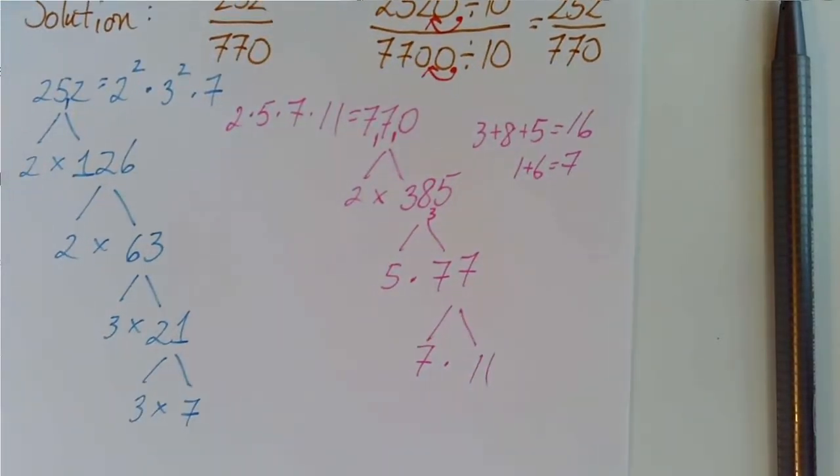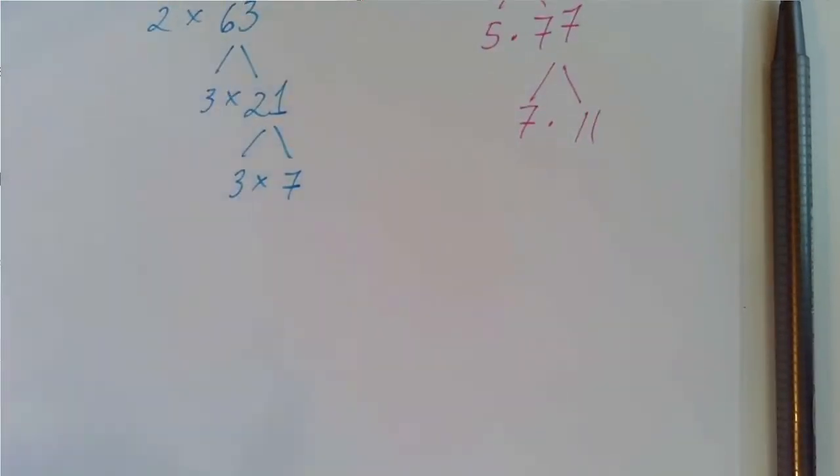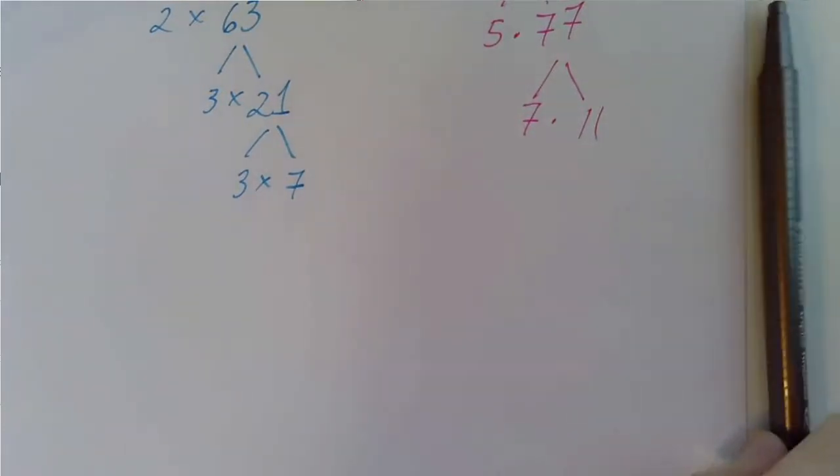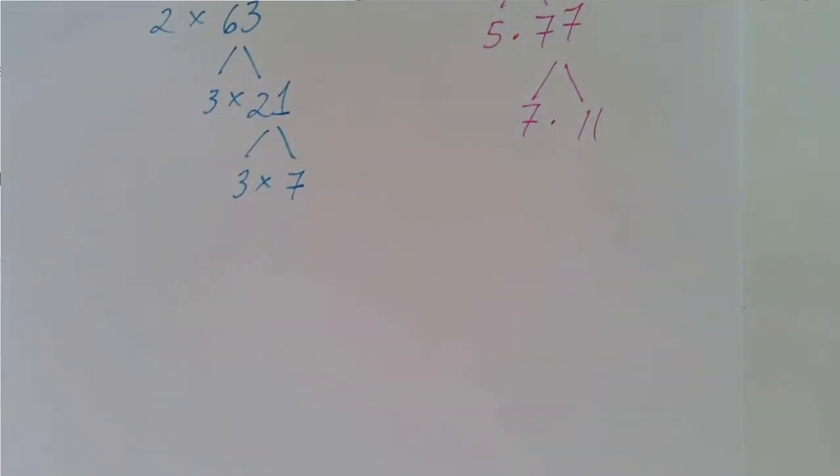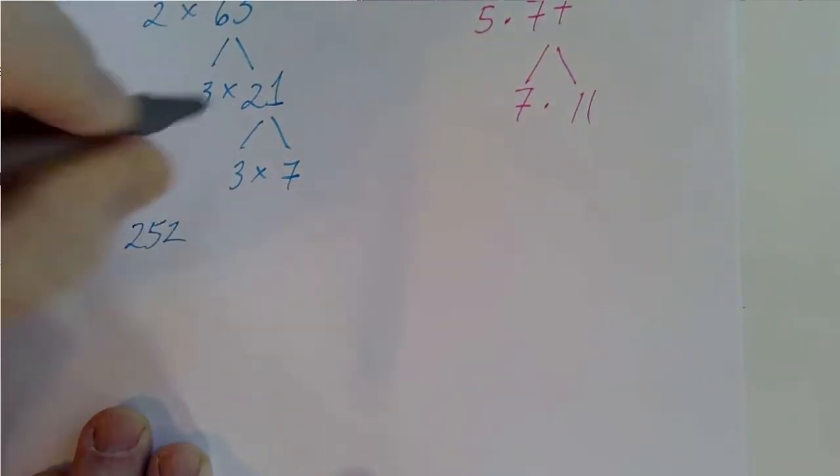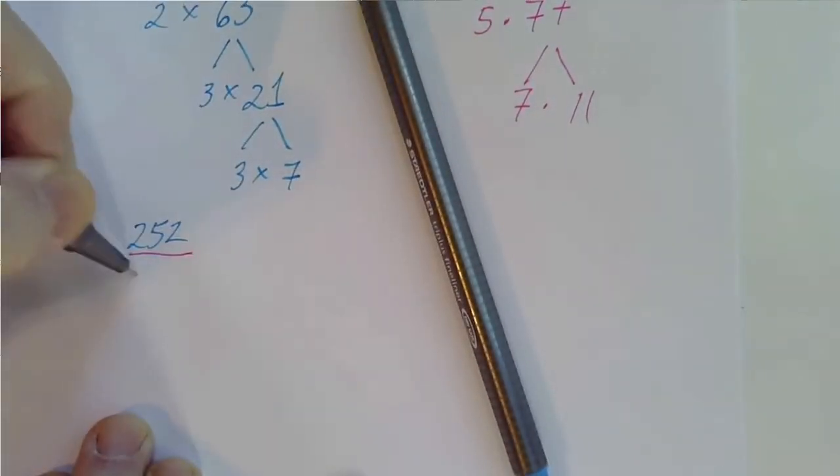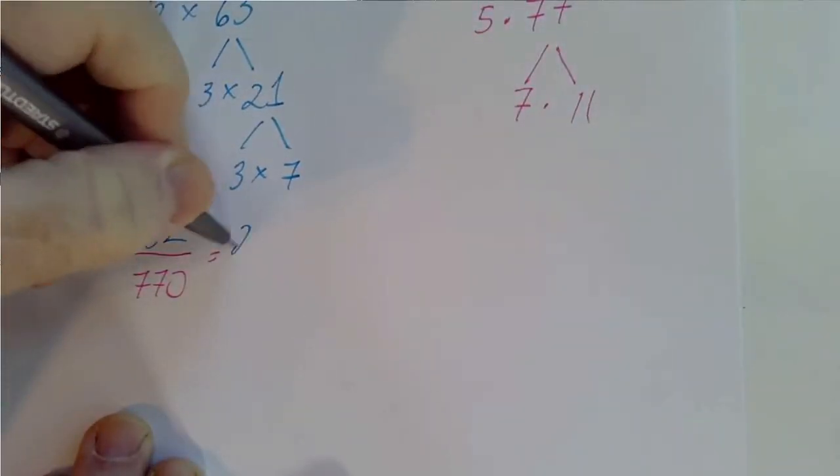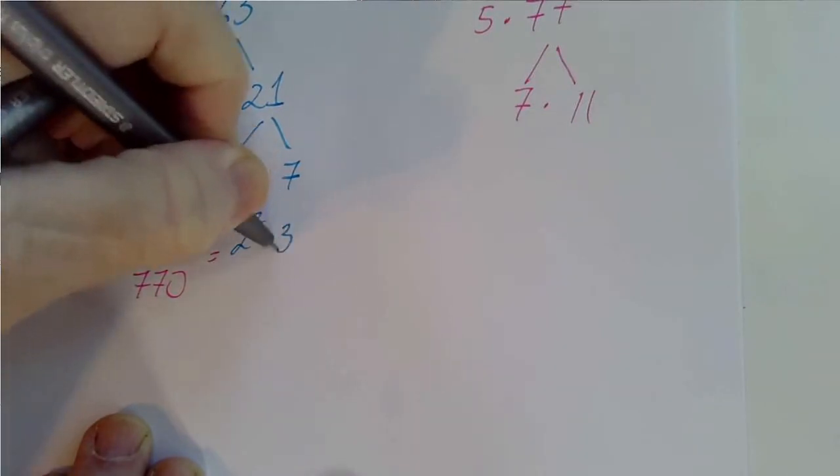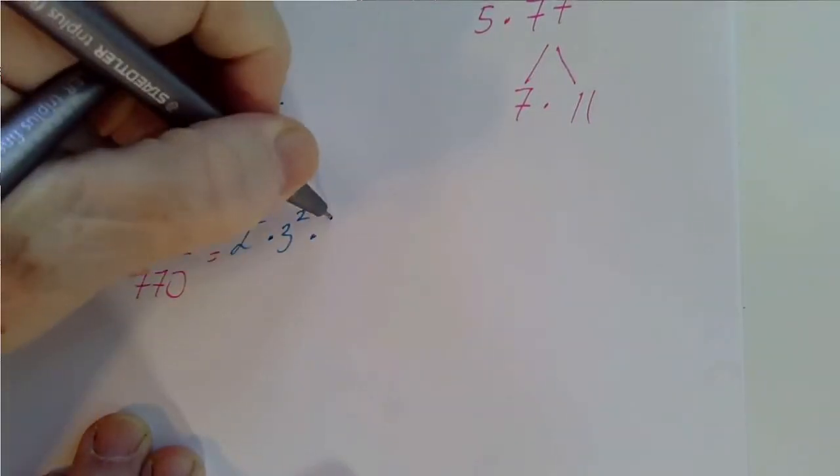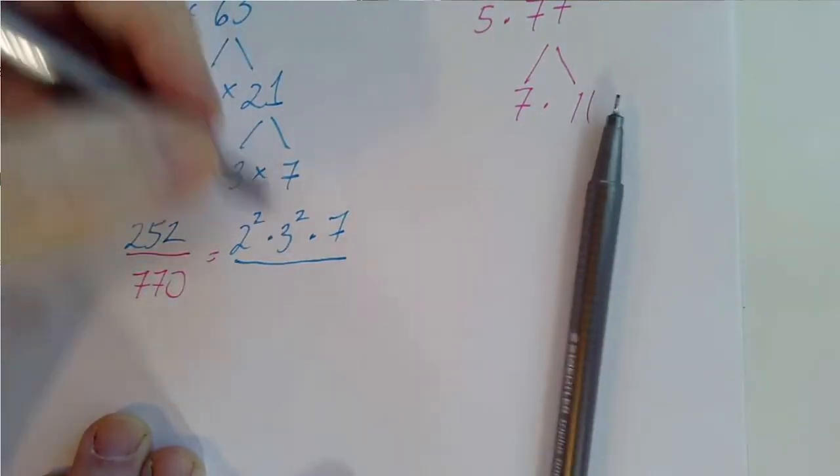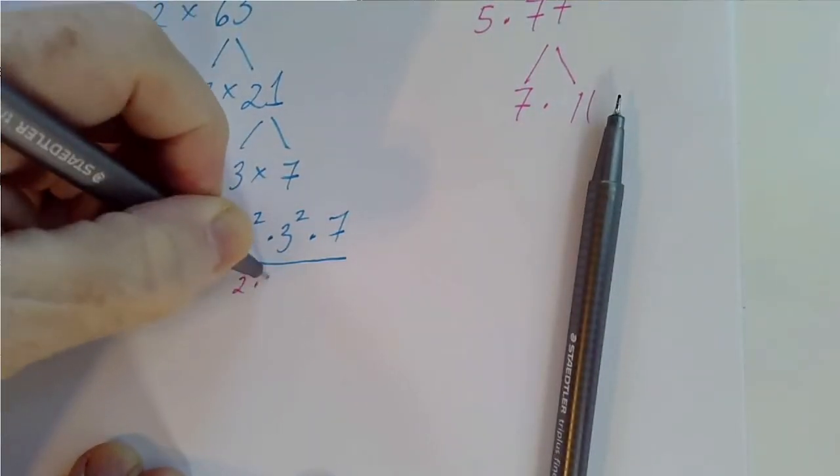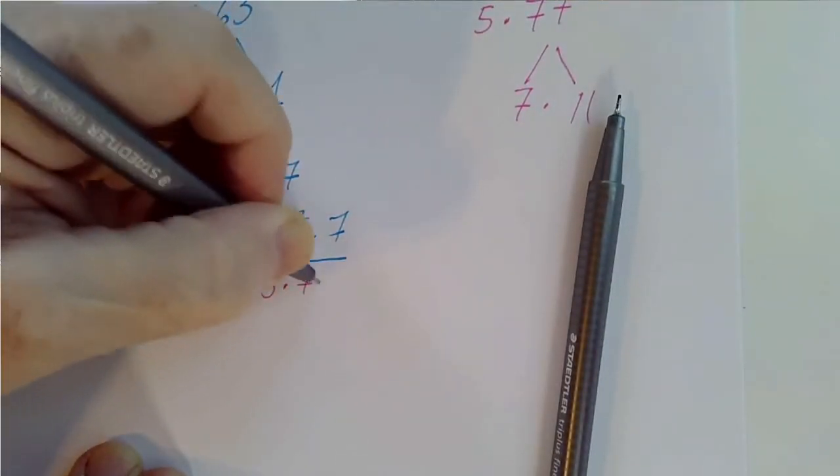And that means that we can write 252 over 770 as 2 squared times 3 squared times 7, and 2 times 5 times 7 times 11.